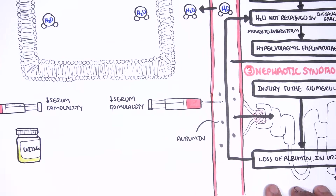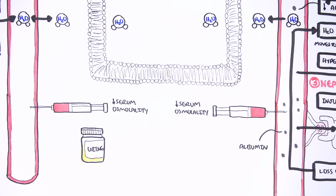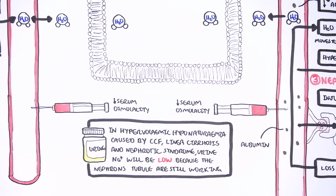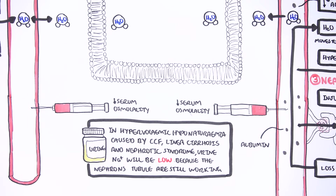In congestive cardiac failure, nephrotic syndrome, and liver cirrhosis, the urine sodium will usually be low. This is because the kidneys still work and can reabsorb sodium to try to maintain normal sodium levels.